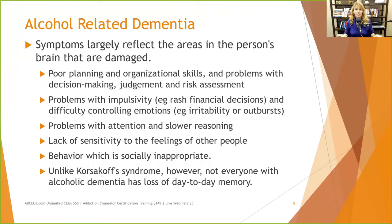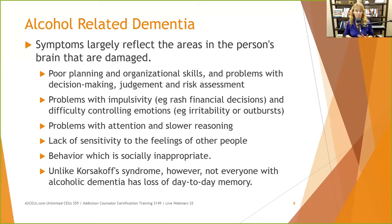People with ARBDs may have problems with attention and slower reasoning — go slow. Many will not do well in psychoeducational groups because it goes too fast. They may need smaller chunks of information. In a treatment center group with one ARBD patient, that person is probably only getting about 20% of what's discussed, so they'll need handouts and possibly more individual sessions.